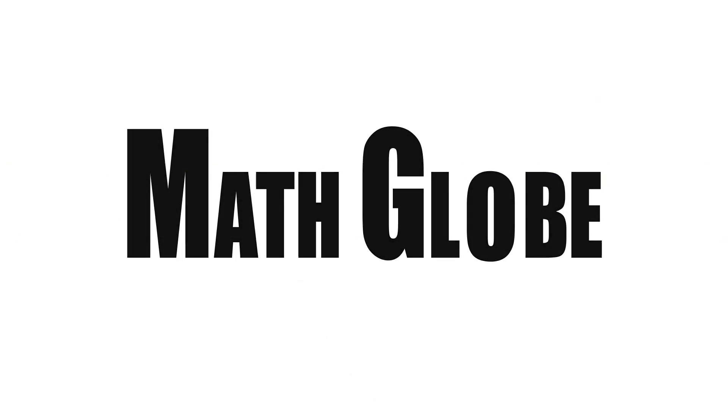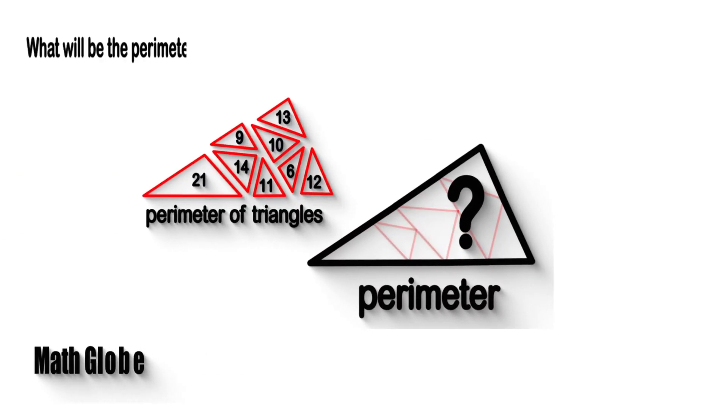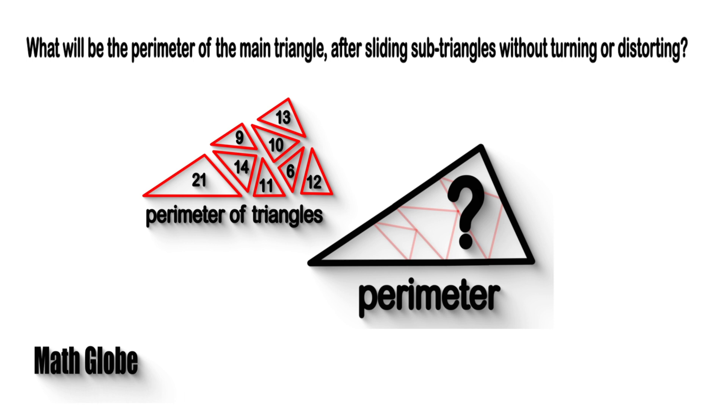Hi, this is MathGlobe. What will be the perimeter of the main triangle after sliding sub-triangles without turning or distorting?